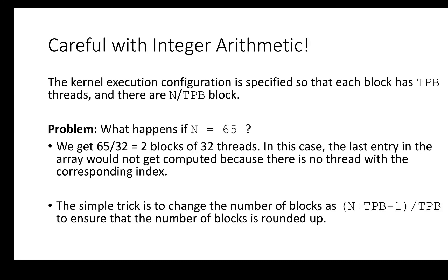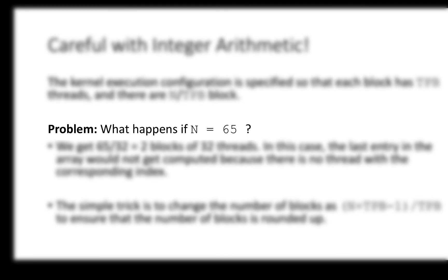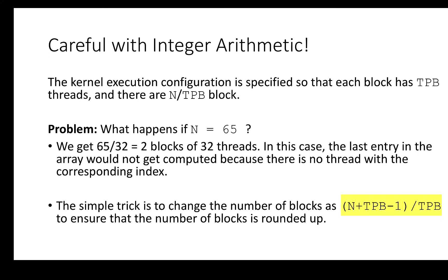A second point to pay attention to is the execution configuration. In our code, the kernel execution configuration specifies each block has tpb threads and there are n/tpb blocks. We might have a problem if n is not a multiple of 32 — for example, if n is 65, we would get 65/32 = 2 blocks of 32 threads, and the last entry in the array would not get computed because there is no thread with the corresponding index. The fix is to round up the number of blocks using the expression: (n + tpb - 1) / tpb.